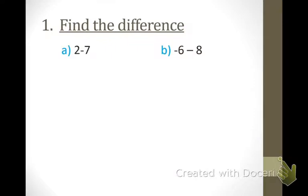The instructions here are asking us to find the difference. The first thing you want to think about is what the sign is. What sign is in front of this 2? Positive — if you ever cannot see a sign, you know it's positive. What sign is in front of that 7? Negative. Same sign or different sign? Different sign. So let's subtract those two. What's 7 minus 2? 5. Now take the sign of the larger number — 7 is larger, so it's going to be negative. Negative 5.